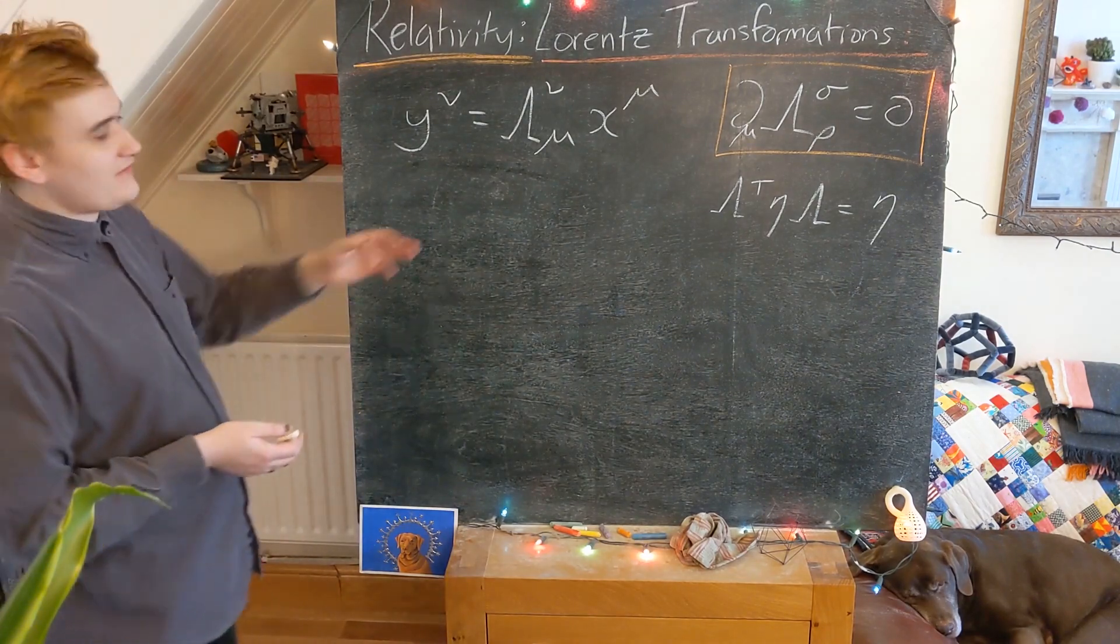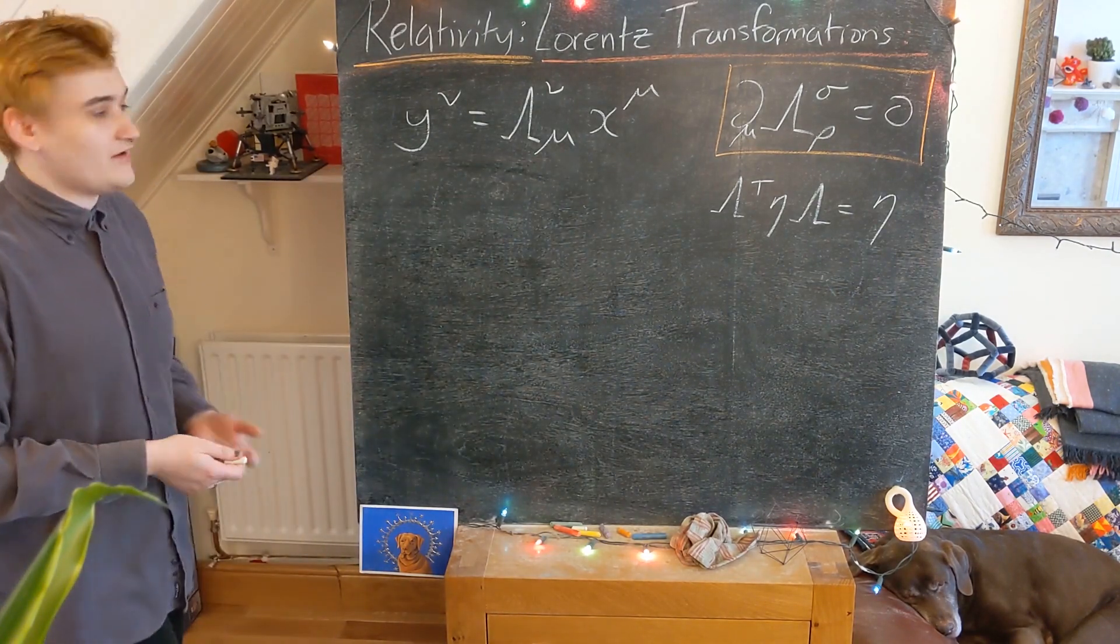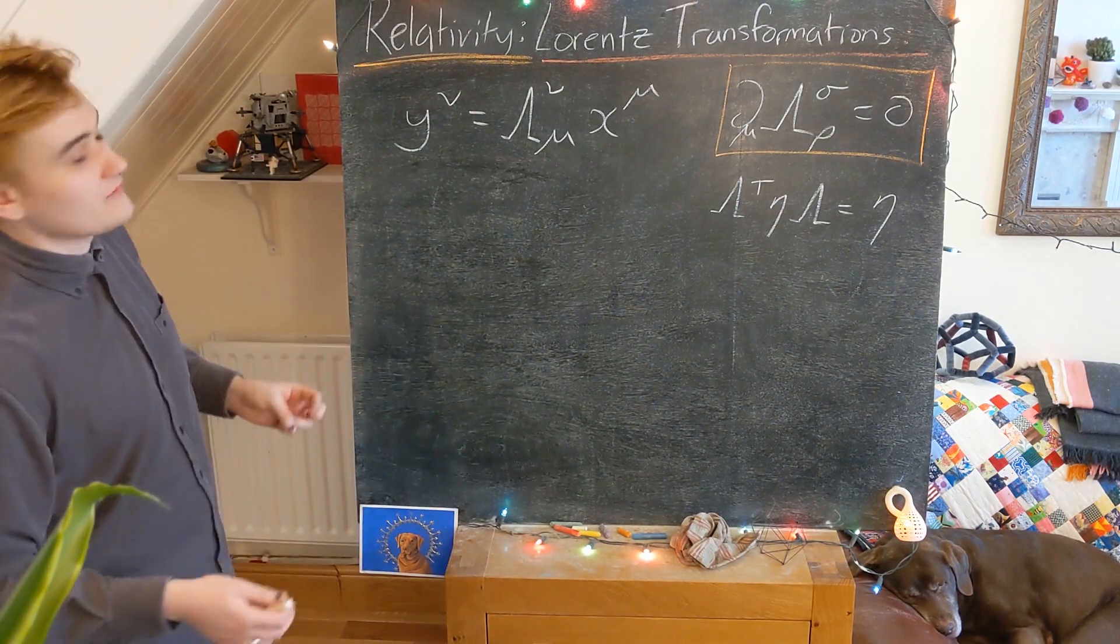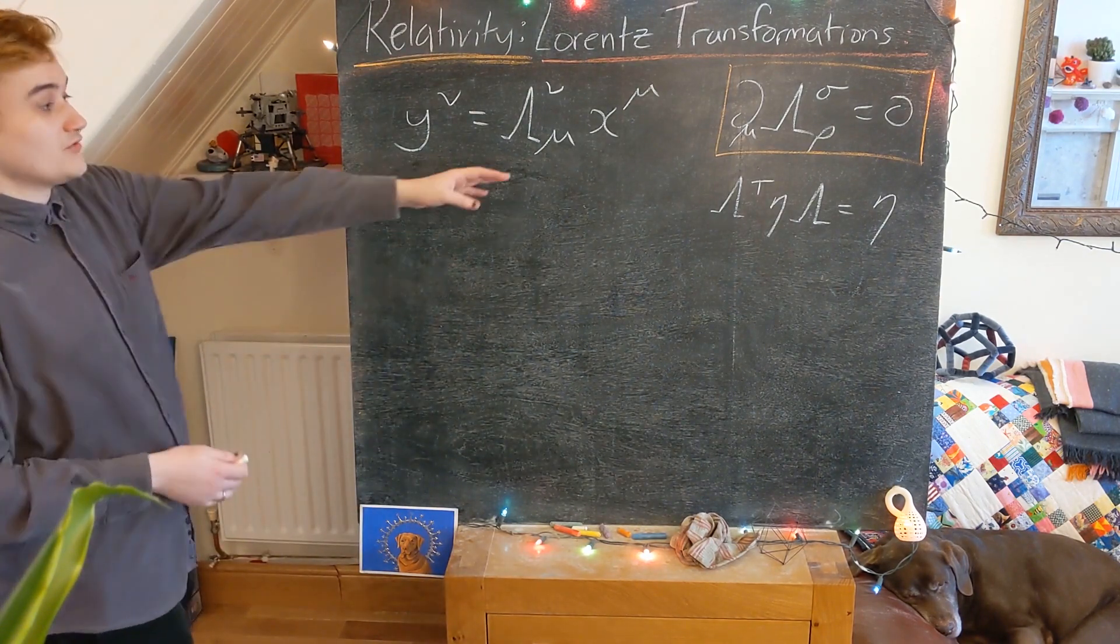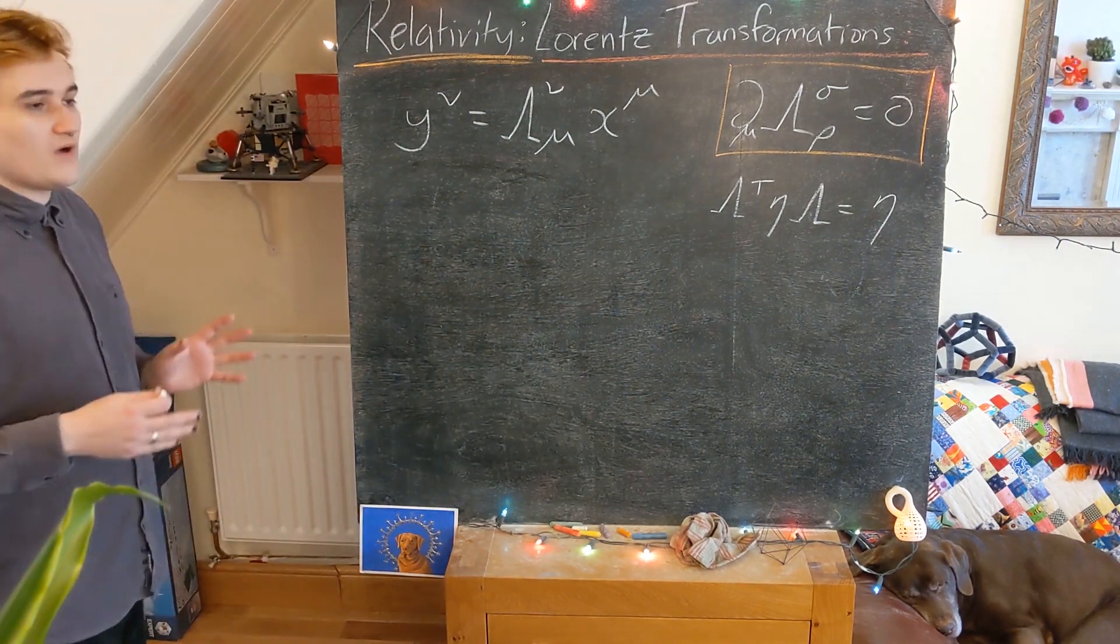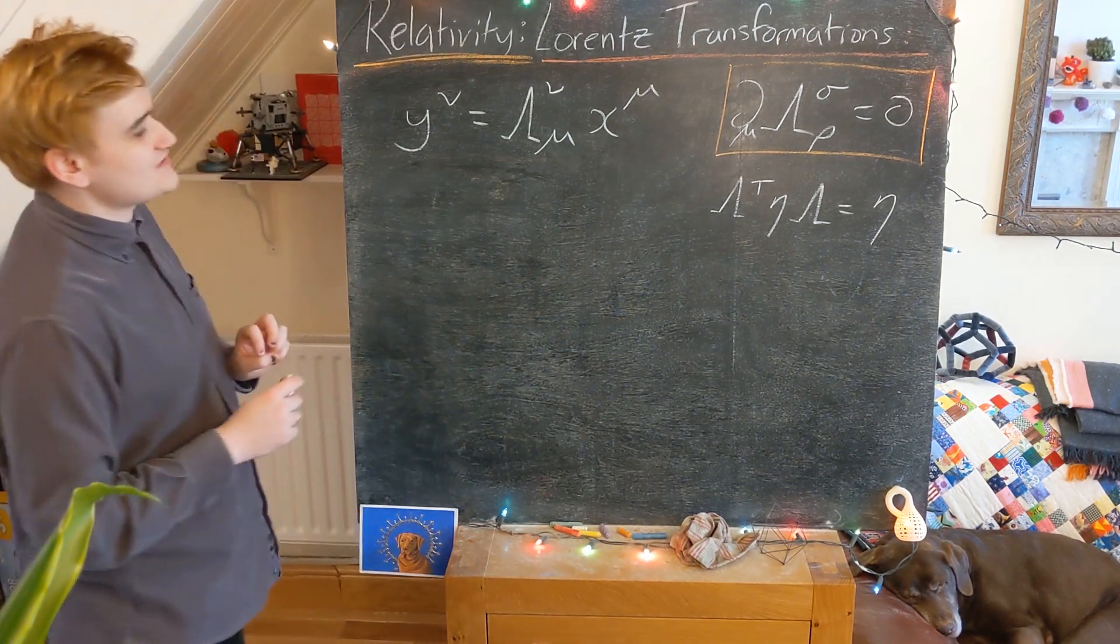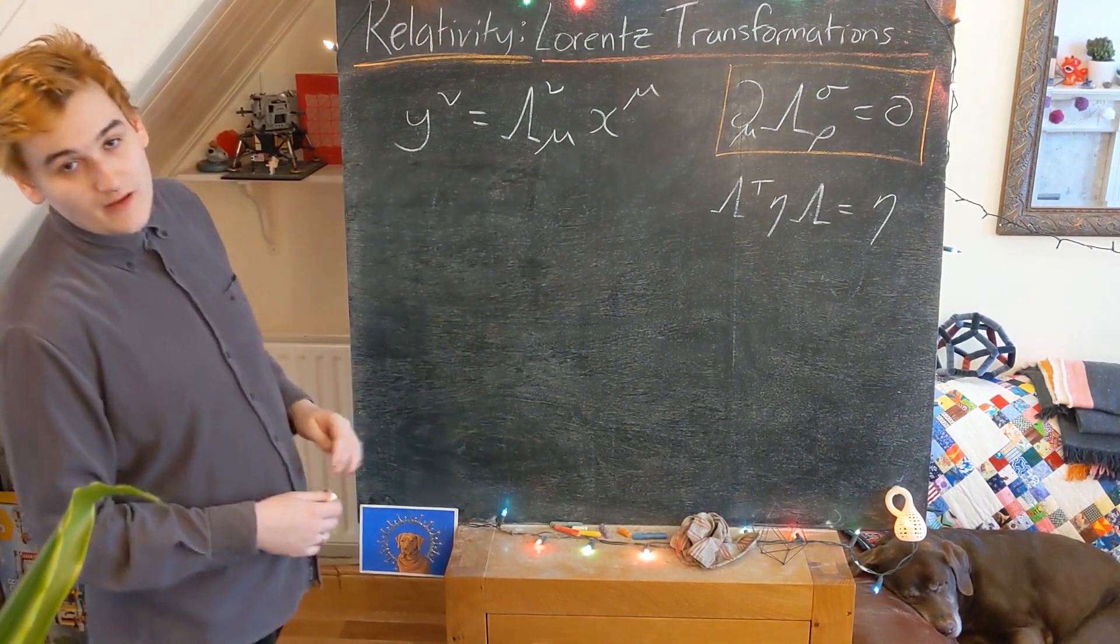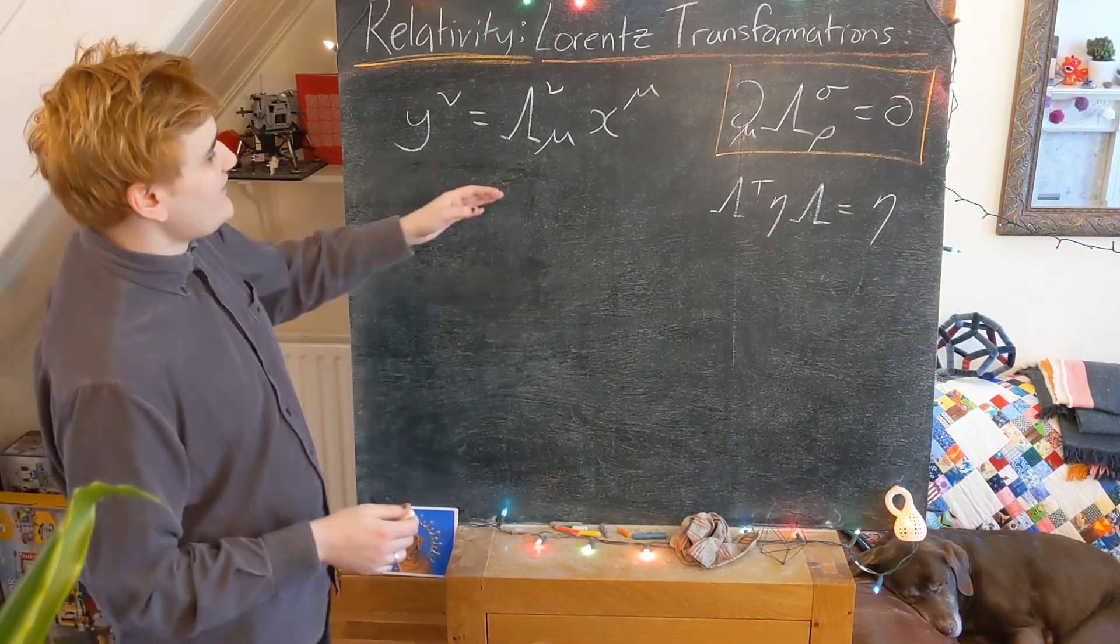But now how do we know that these matrices that we found are all of the possible Lorentz transformations? How do we know that we're not missing some that could also satisfy all these conditions? Well, as I sort of briefly alluded to, we could have found what these lambda matrices are in a more general group theoretic way.